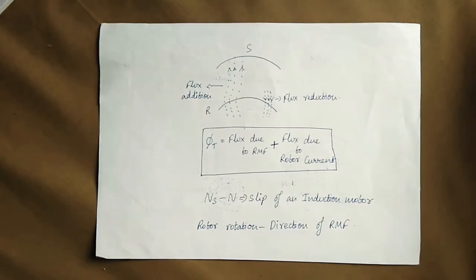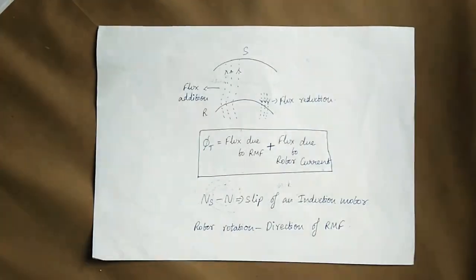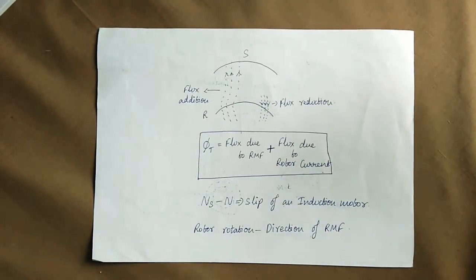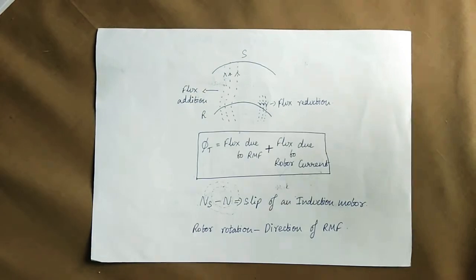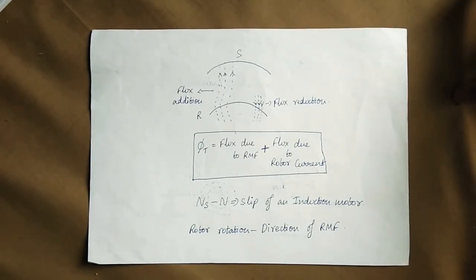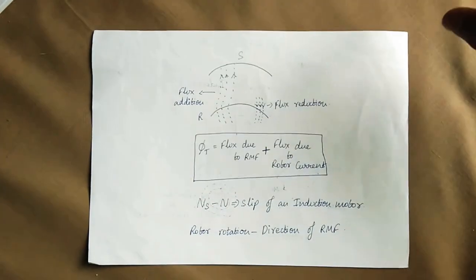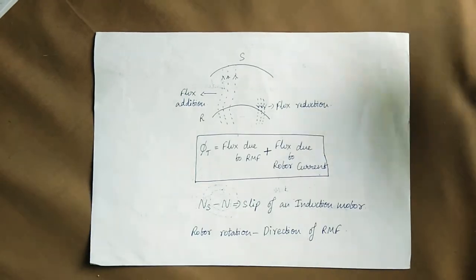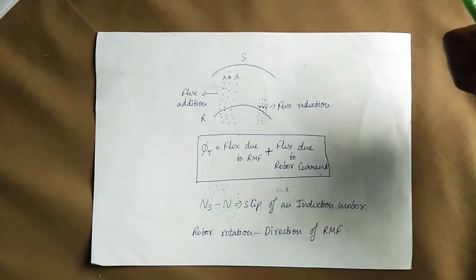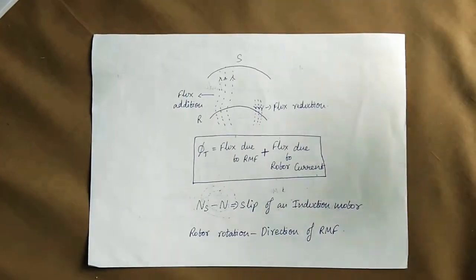If you consider the concept of a DC motor or AC motor, the magnetic field and the rotor speed interaction is key. The difference in the speed of the magnetic field and the output of the rotor is the slip. The rotating magnetic field determines the direction of the rotor speed.